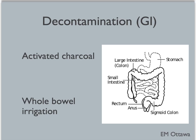What if the toxin is already ingested? The two main methods to remove it from the GI tract are activated charcoal and whole bowel irrigation. Activated charcoal can be given for an ingestion that presents within the first 1-2 hours, when the toxin is still in the stomach. It will bind to the charcoal and then be excreted. Charcoal will not bind to liquids or metals, and it can also cause aspiration in patients with decreased GCS. Whole bowel irrigation is used for specific toxins that do not bind to charcoal, and involves giving large volumes of fluid to flush out the contents of the bowel.